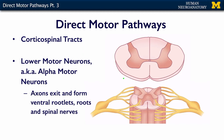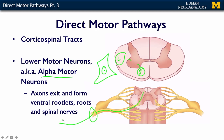The corticospinal tracts — lateral and ventral — travel here, and they synapse on what are called lower motor neurons, also known as alpha motor neurons. These are large motor neurons that send their axons out through the ventral rootlets and ventral roots, which then join with the dorsal roots to form the spinal nerve. These become all of the named nerves we discussed when talking about the plexuses and peripheral nerves back in the spinal cord lecture.